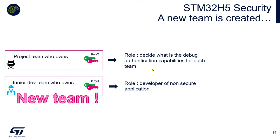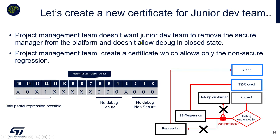Once the full authentication procedure is done, you can request an action. The software checks that the action is consistent with what is inside the permission masks across all certificate levels — a requested action must be set at the same position in each certificate's permission mask. Now let's try this in practice: suppose we have a new junior team and want to provide limited capabilities. The junior team creates a key pair and provides the public key to the project team. The project team doesn't want the junior team to remove the secure manager or do debug in closed state — only non-secure regression is allowed.